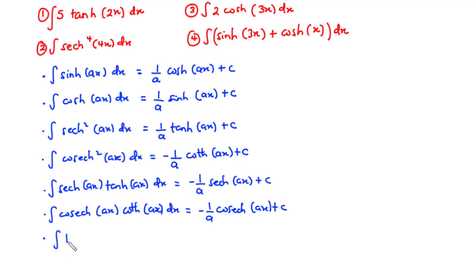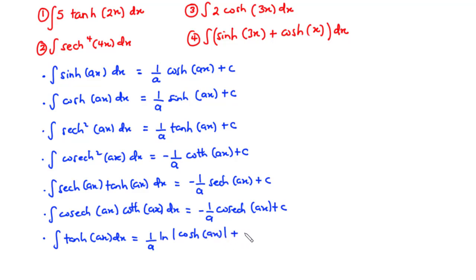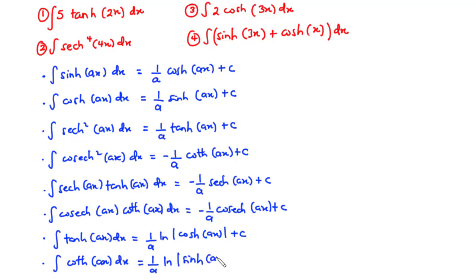Let's move on to the integral of tanh ax dx. That will be equal to 1 over a times ln of the absolute value of cosh ax plus c. And lastly, we have the integral of coth ax dx, also equal to 1 over a times ln of the absolute value of sinh ax plus c.